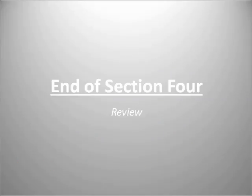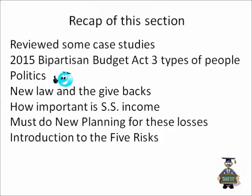This is the end of section four. As a recap: we reviewed case studies, learned about the Bipartisan Budget Act and the three types of people it created, covered the politics joke, examined the new law and givebacks, discussed how important Social Security income is in light of those givebacks, and stressed that new planning is required to make up for the shortfalls. Money people thought they'd receive is no longer available.